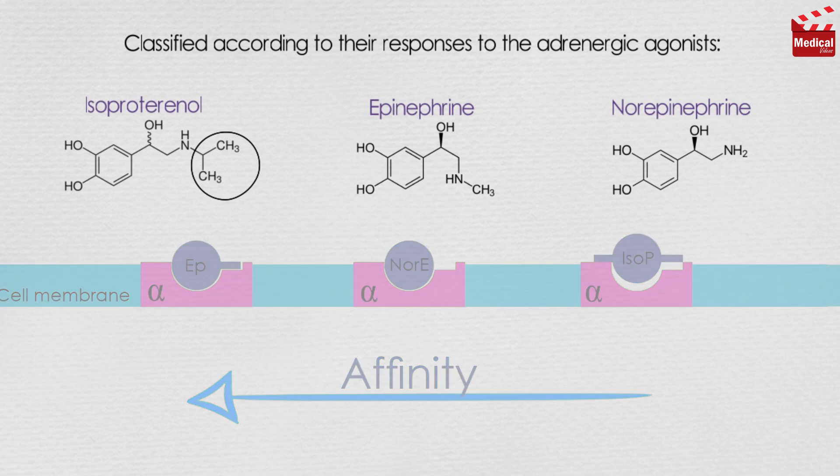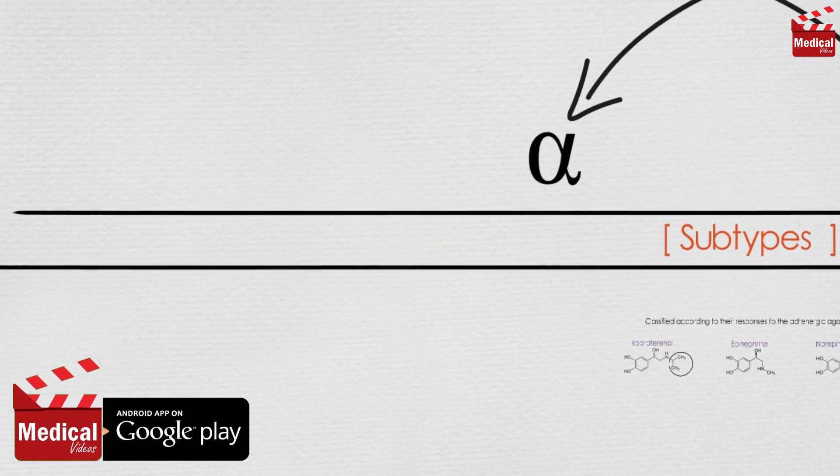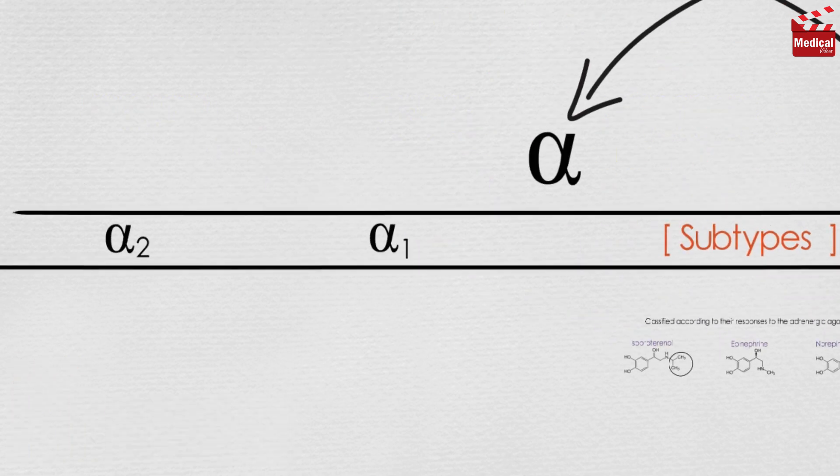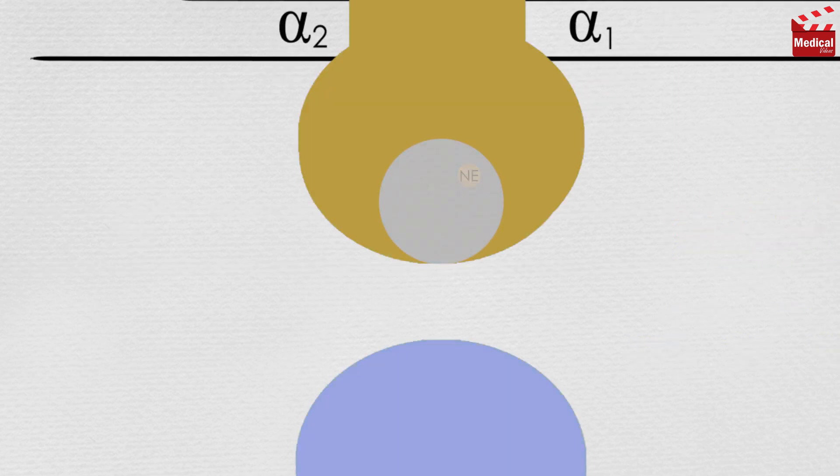They are subdivided into two main subgroups, alpha 1 and alpha 2, based on their affinities for agonists and antagonists. Alpha 1 receptors present on the postsynaptic membrane of the effector organs, and alpha 2 receptors are located primarily on sympathetic presynaptic nerve endings and control the release of norepinephrine.